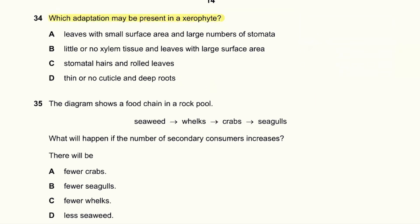Question 34: Which adaptation may be present in a xerophyte? A xerophyte will not have a large number of stomata, as more stomata means more water loss. It will not have leaves with a large surface area either. Stomatal hairs and rolled leaves are correct xerophyte properties — rolled leaves decrease surface area exposed to the wind, reducing water vapor loss. Stomatal hairs maintain a low concentration gradient, further reducing water loss. So 34C is the answer.